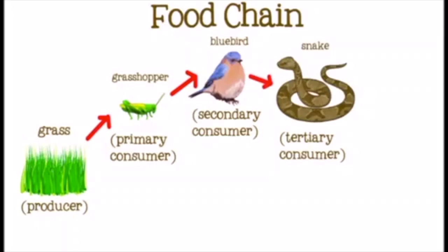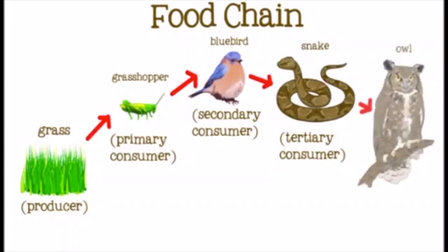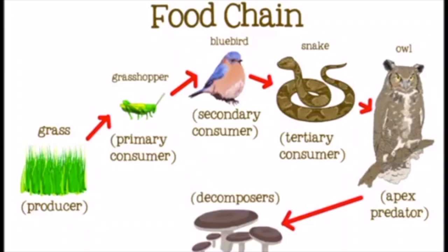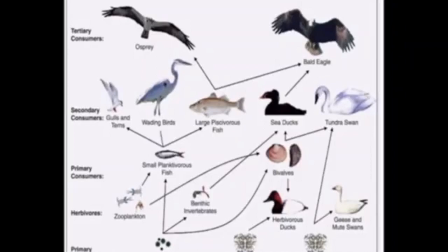When an animal dies, decomposers like bacteria and fungi break its body into nutrients that help plants in their life. This is the cycle of energy flow. Now we will talk about the food web. A food web is a group of food chains that combine together in an ecosystem, as you can see.